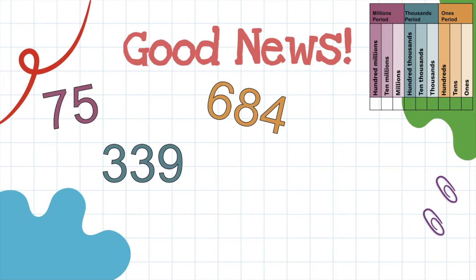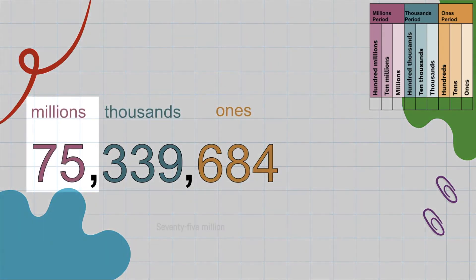Here's some good news. You already know how to read number names when there's a two-digit or a three-digit number. Now when we bring them together and form one large number, we need to focus on what period the number is in. We still know how to read this number name. It's still 75. It's just that 75 is like the first name and then million, which is the period that it's in, that's going to be the last name. So the full name, first and last name, would be 75 million.